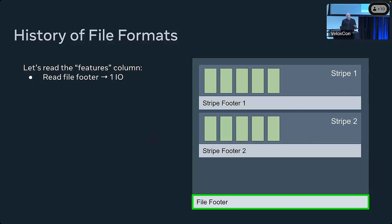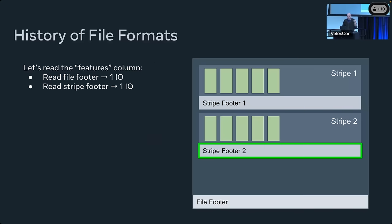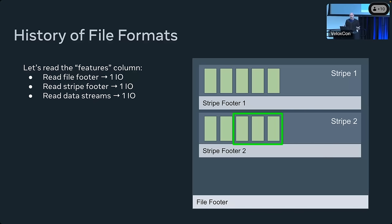If we want to read the features column from this file, we need one I/O to read the file footer, another I/O to read the stripe footer, and then one or more I/Os to read the actual streams for that column. What's the problem with I/Os? If you're using physical hard drive storage to lower storage costs, the cost of an I/O means the drive head needs to seek to the right location — on average 12 milliseconds. Every I/O costs 12 milliseconds you will never get back. So we want as few I/Os as possible.